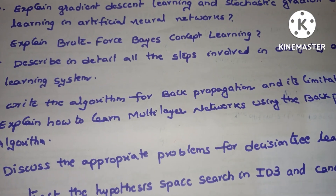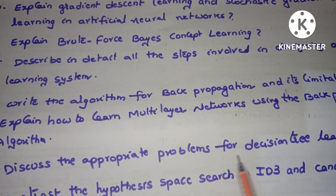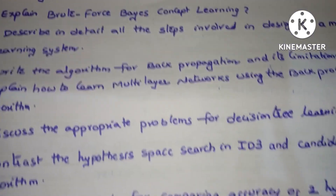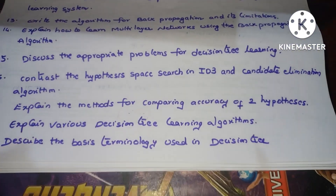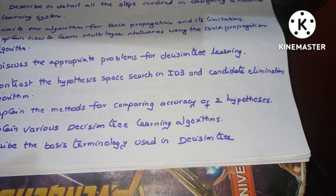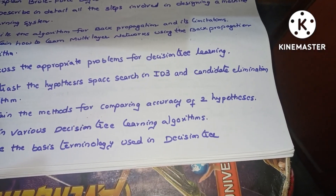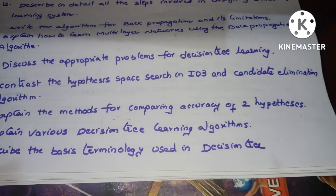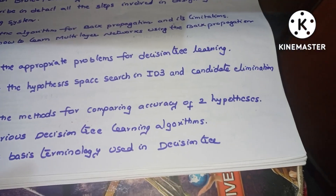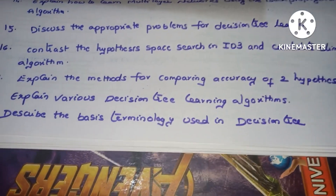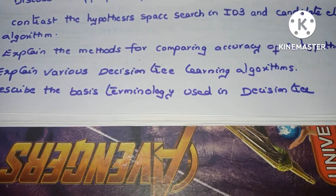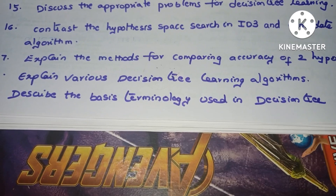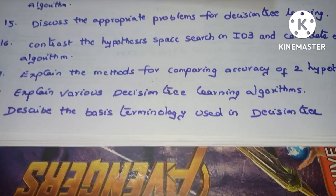Next one is: discuss the appropriate problems for decision tree learning. Next one is: contrast the hypothesis space search in ID3 and candidate elimination algorithm. Next one is: explain the methods for comparing accuracy of two hypotheses. Next one is: explain various decision tree learning algorithms and describe the basic terminology used in decision tree.